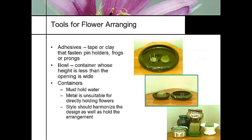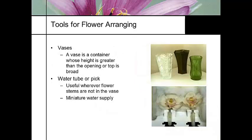Some of the tools that you'd use for floral arranging include adhesives, frogs, and almost everybody uses Oasis. For a bowl container, you want to make sure the height is less than the opening is wide. Arrangements need to hold water — if it's metal, it needs to be treated or lined. The style should be in harmonious design to the environment it's going into, not just the arrangement itself. A vase is a container whose height is greater than the opening.